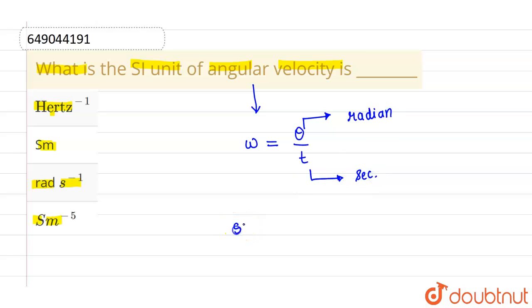So the SI unit of omega, that is angular velocity, will be equals to radian per second. This equals to radian per second.